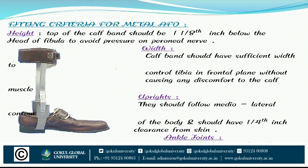Fitting criteria for metal AFO: height — the top of the calf band should be one and one-eighth inch below the head of the fibula to avoid pressure on the peroneal nerve. Width — the calf band should have sufficient width to control the tibia in the frontal plane without causing any discomfort to the calf.